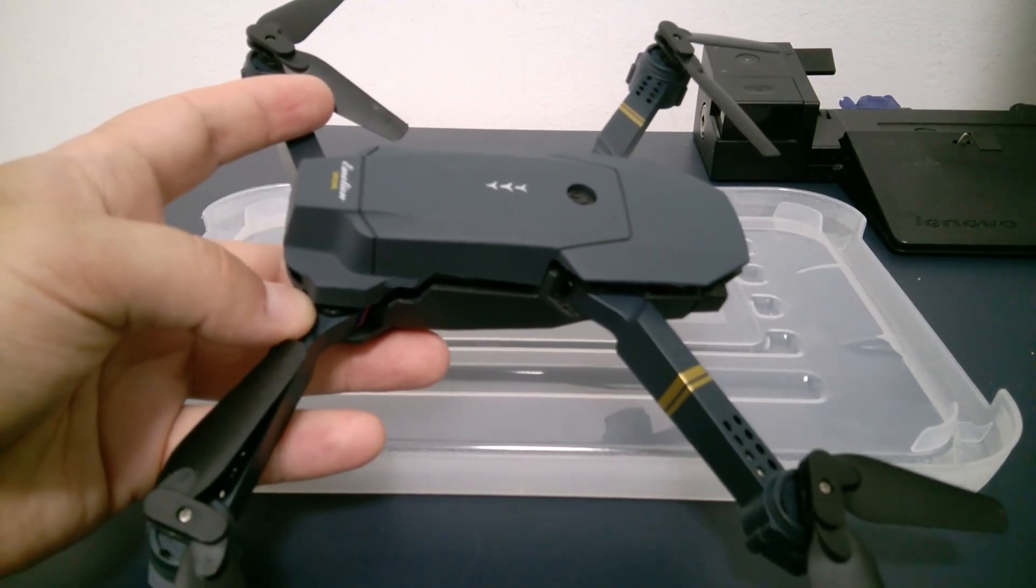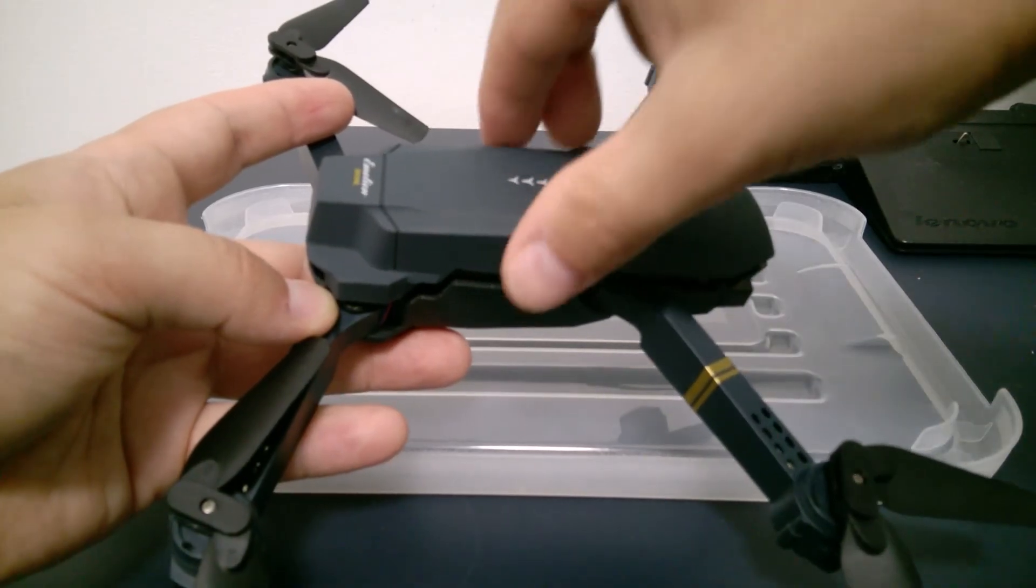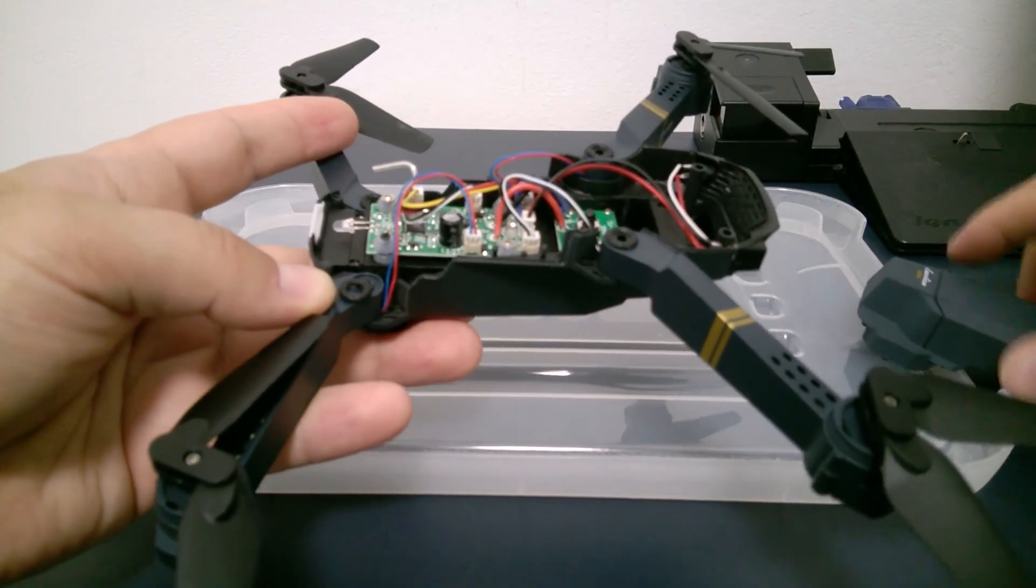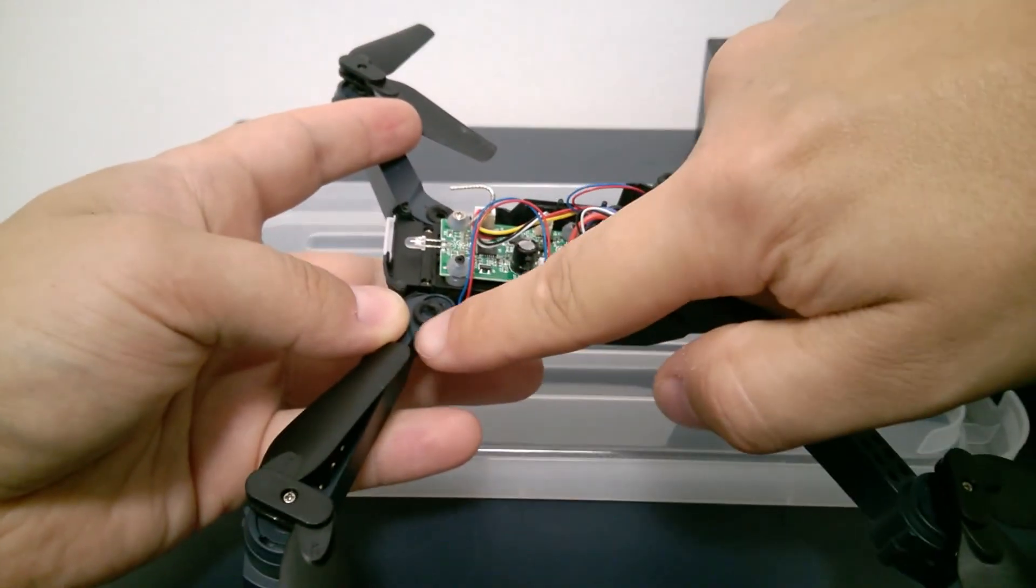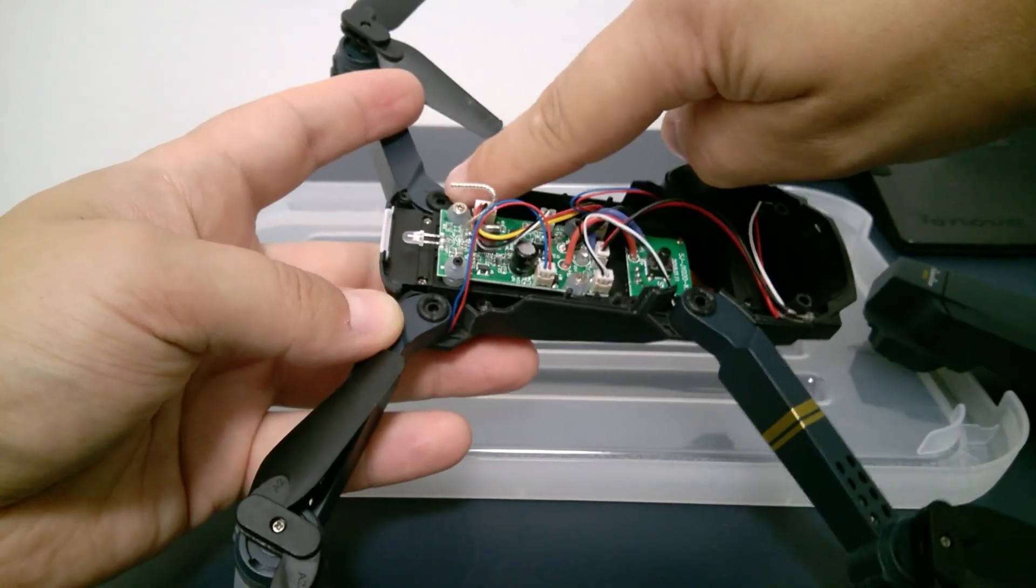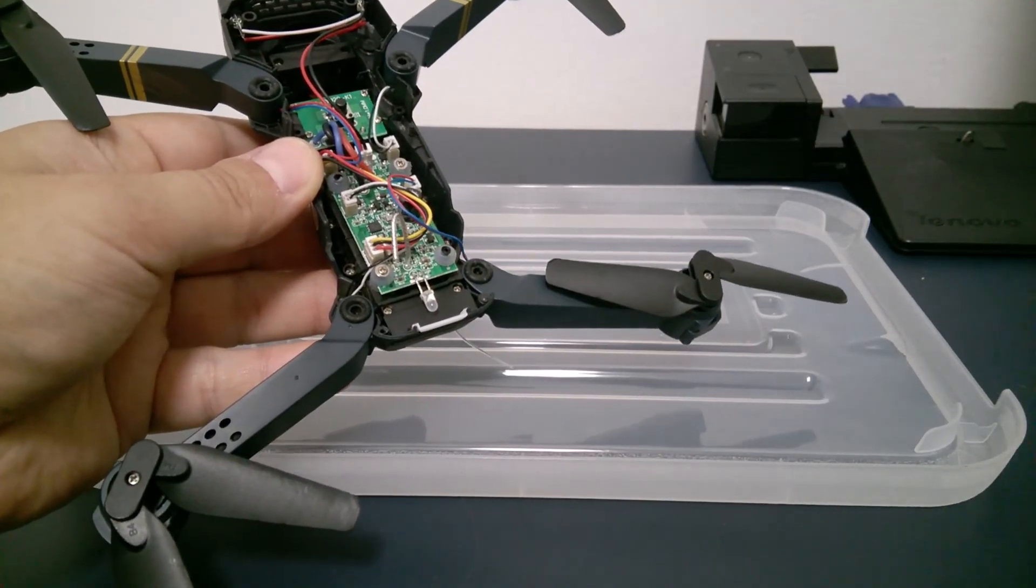Once you unscrew those screws, open this cap and make sure you don't lose rubber o-rings which are located on the top of the arms. Next look at the wiring.